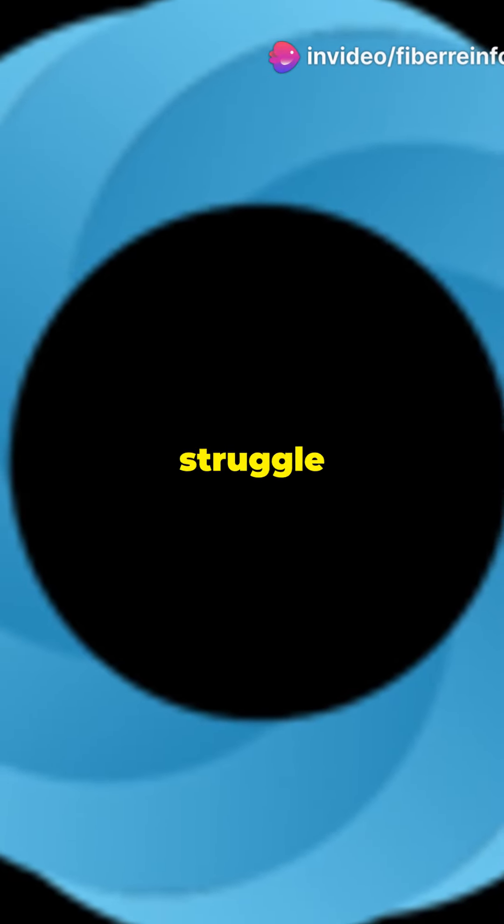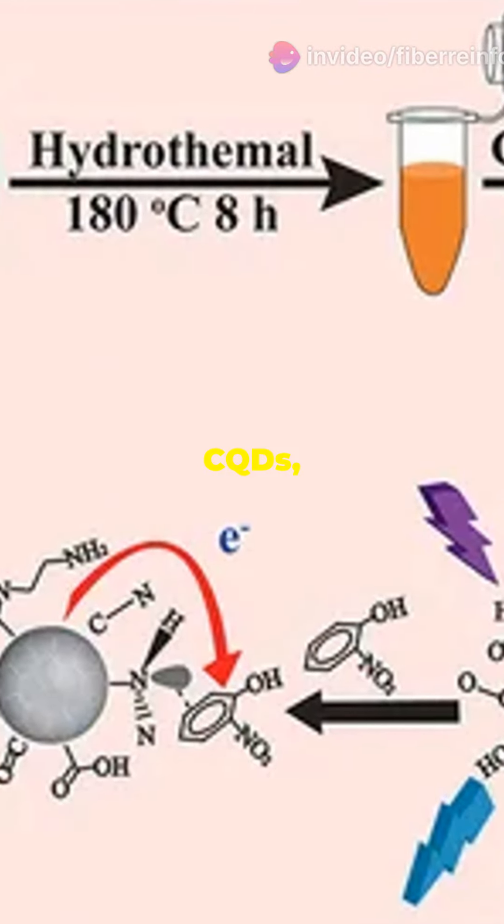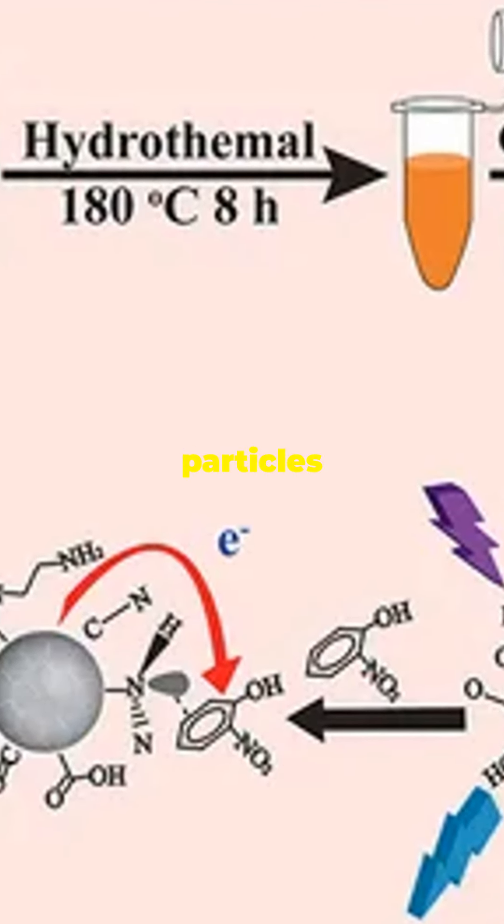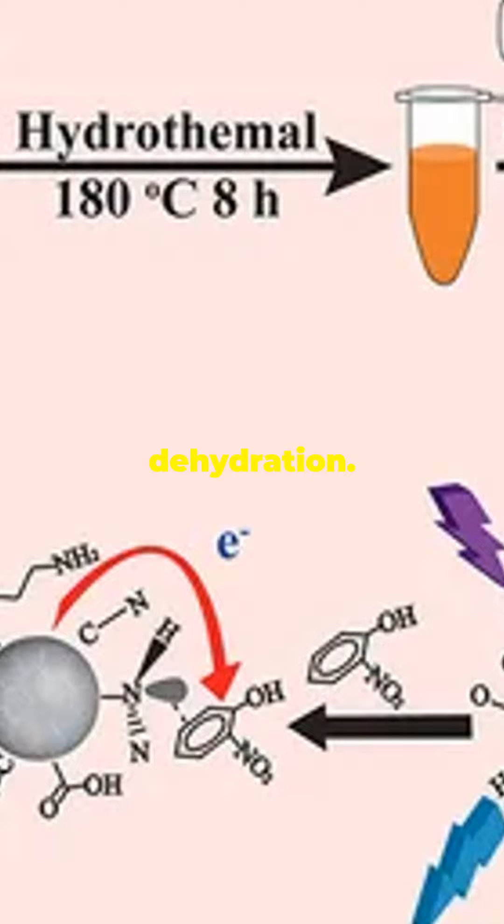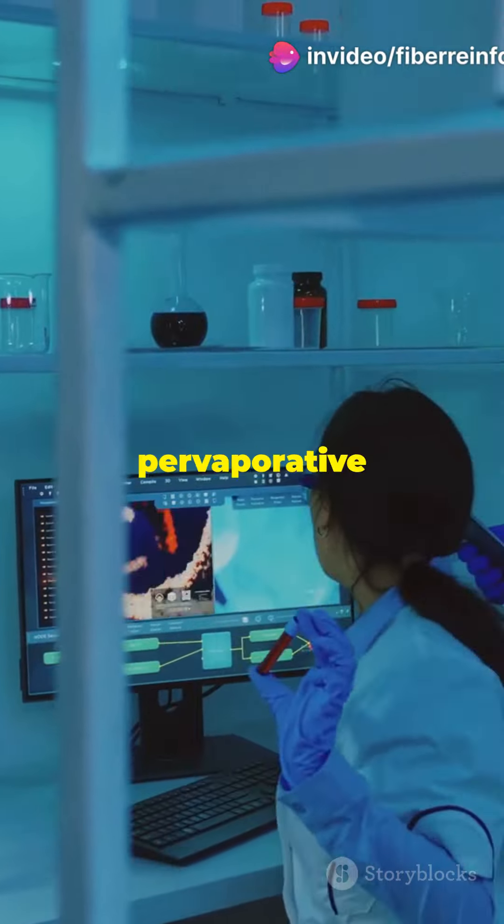Why do 90% of ethanol plants struggle with dehydration? Carbon quantum dots might have the answer. Carbon quantum dots, or CQDs, are tiny but mighty particles revolutionizing ethanol dehydration. Researchers have developed dual-layer hollow fibers incorporating CQDs for prevaporative dehydration of ethanol.